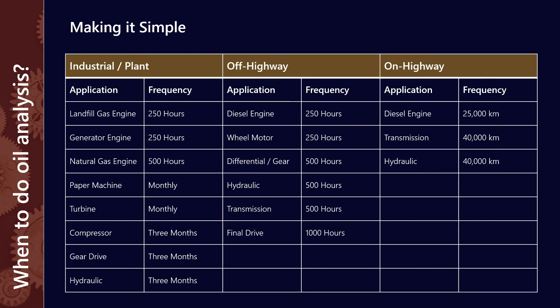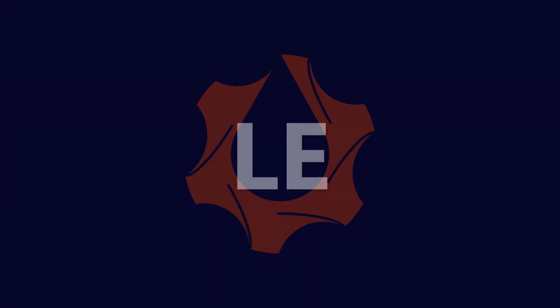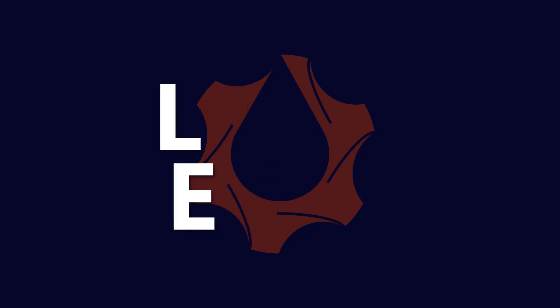I should stress this table is very generic. If you had, for example, a hydraulic system which was very critical to your operation, you would want to consider sampling with a higher degree of frequency. This is just a general rule of thumb. I hope that information was helpful — if you have any questions, message me. Thank you very much for listening. This has been Lubrication Explained.